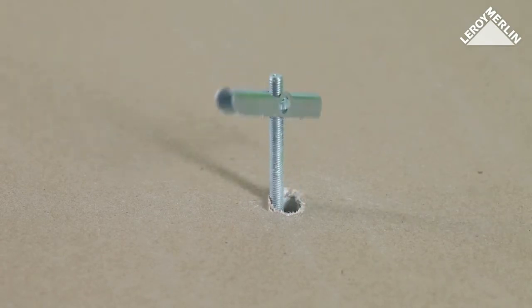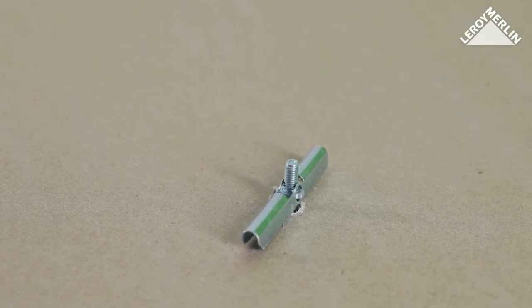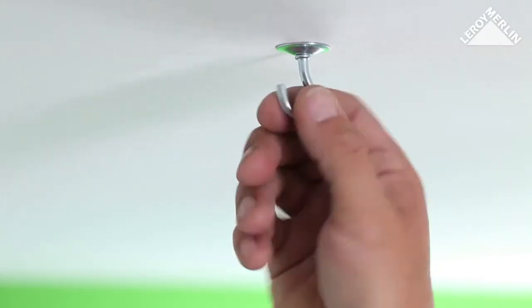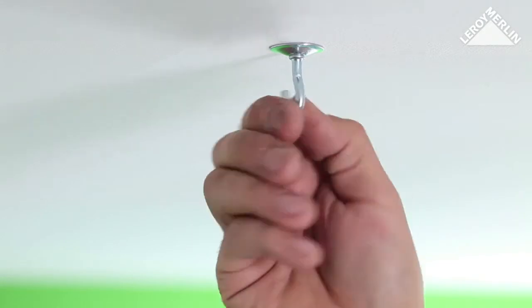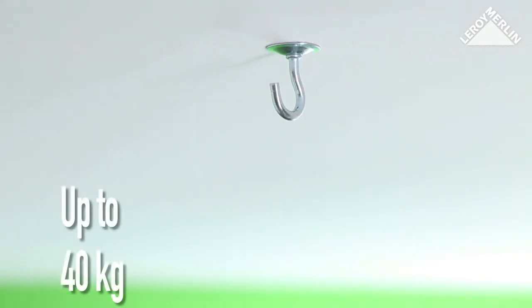Behind the plasterboard, the toggles spring open to rest upon the inside of the ceiling. Tighten the screw to lock the toggles against the ceiling plasterboard. These special anchors can support up to 40 kg.